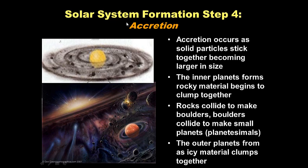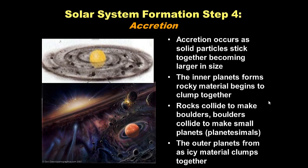Accretion — solar system formation step four. Remember how the moon formed? Accretion occurs when solid particles stick together, becoming larger in size — like building a snowman by adding more and more snow. Small rocks begin to clump together, collide to make boulders, boulders collide to make really big boulders, and those collide through gravity to make small planets called planetesimals. Gravity is the mutual attraction between all matter in our universe. The outer planets formed similarly when icy material clumped together.